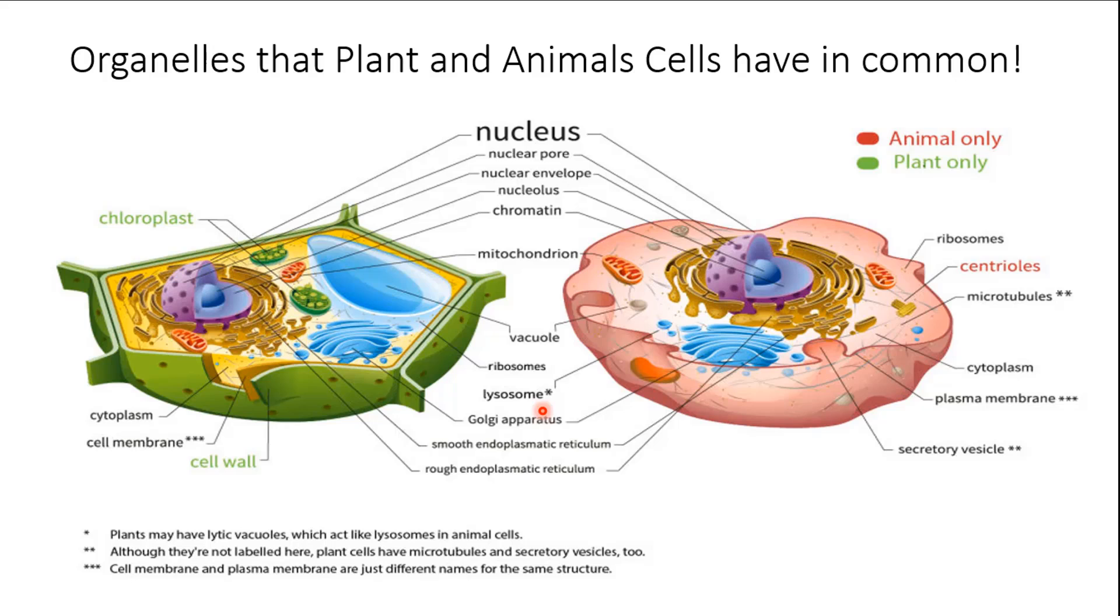They both have lysosomes. Lysosomes in plant cells, they have a special kind of lysosome called a lytic lysosome, and they break down cells. In the animal cells, they have lysosomes also. Plants may have lytic vacuoles which act like lysosomes. They both have Golgi apparatus, which help package things and move things around the cell, and endoplasmic reticulum, which also processes proteins and moves things around the cell.